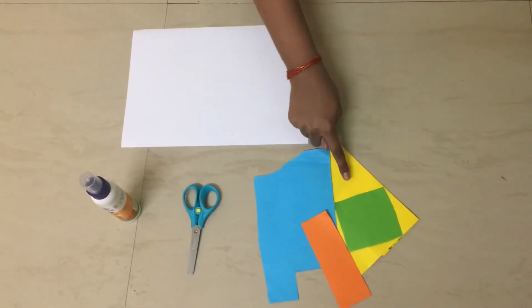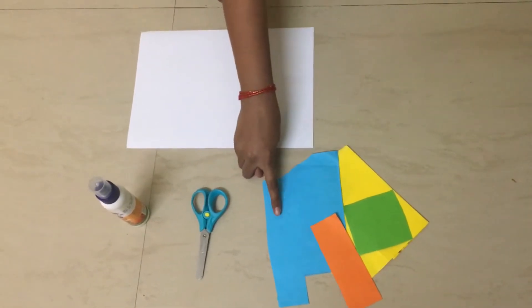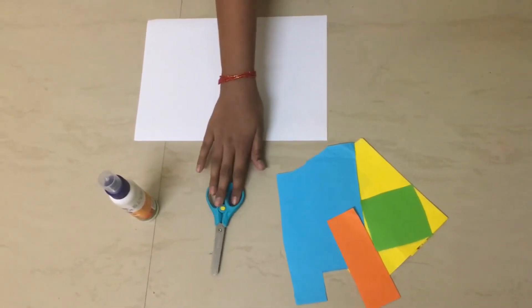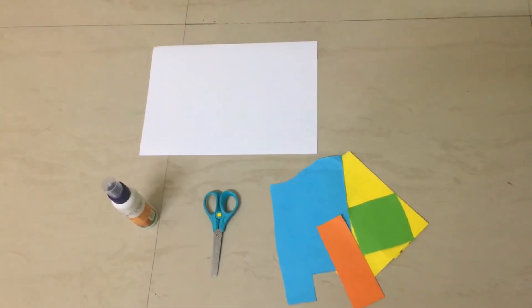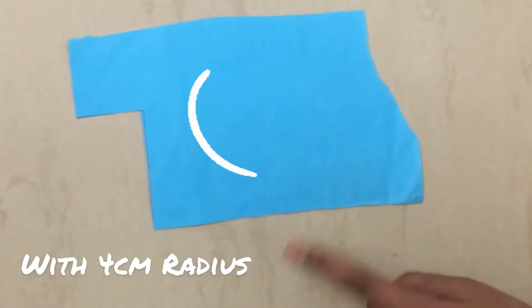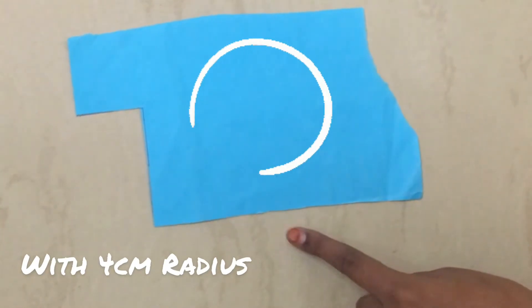Scissor, glue, and some sketches. So let's get started. We should draw a circle with four centimeter radius and cut it.